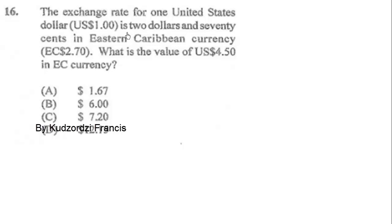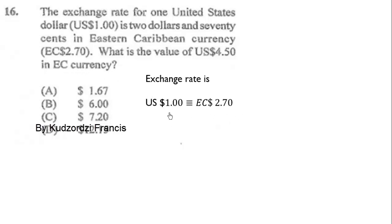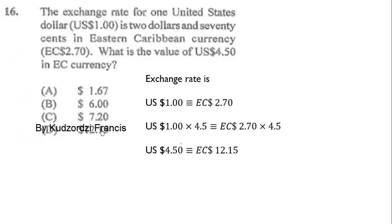The exchange rate for one United States dollar is $2.70 in Eastern Caribbean currency. What is the value of $4.50 US dollars in Eastern Caribbean currency? We know 1 USD = 2.7 Eastern Caribbean dollars. To find the value of $4.50, we multiply both sides by 4.5. So 2.7 times 4.5 gives us $12.15. The correct answer is B.